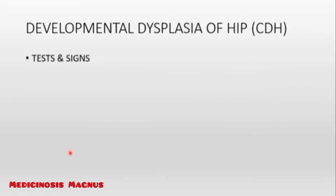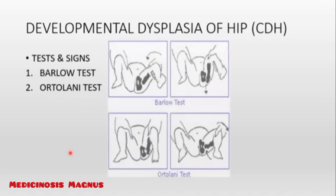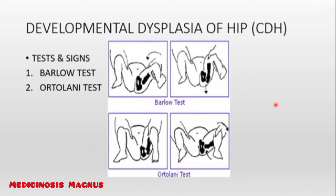Now let's see some tests: Barlow's test and Ortolani's test. As stated earlier, the patient due to DDH cannot abduct the thigh. In the Ortolani's test, the patient's thigh is in adduction — both thighs are close together — and the femoral head is not in the socket. When you abduct the thigh manually, which the patient was not able to do, the femoral head sits inside the acetabulum.